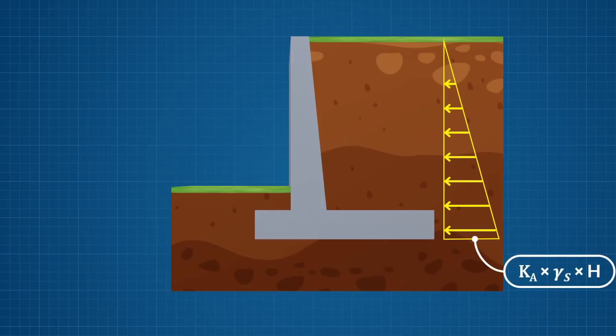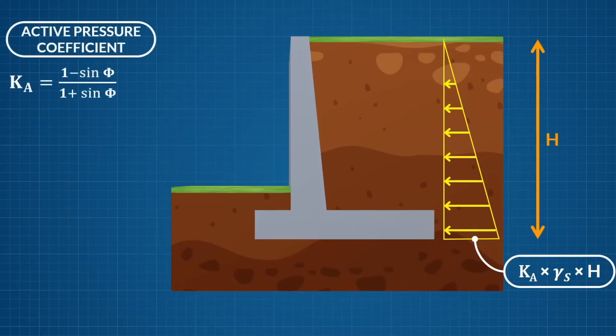Gamma is the unit weight of the soil. Here KA is the active earth pressure coefficient, based on the Rankine theory and calculated by this expression. Here the angle phi is the angle of friction or angle of repose for the soil.